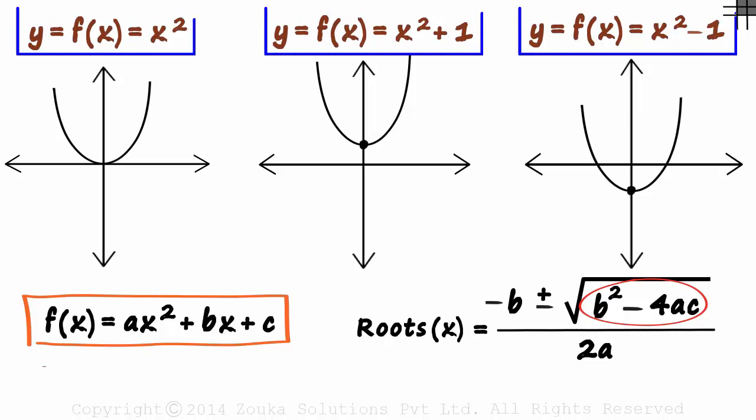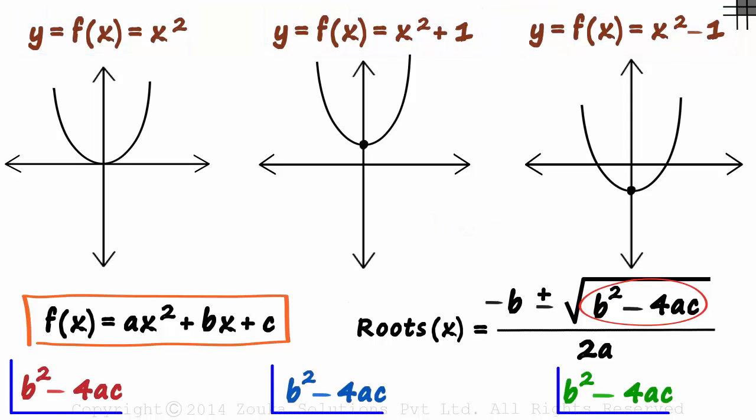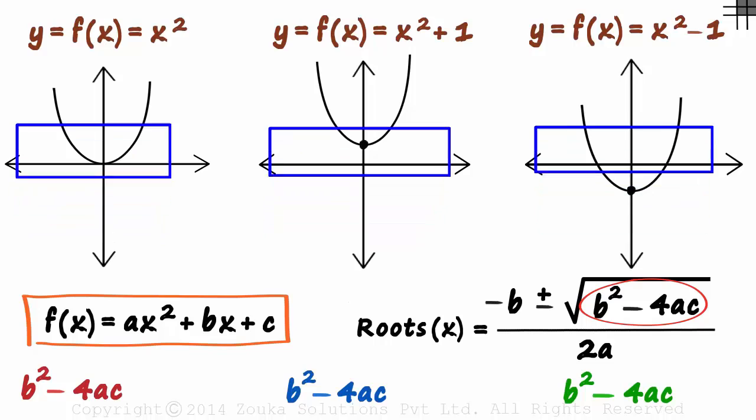Look at these functions. They are all quadratic with b equal to zero. So let's see what b² - 4ac tells us in each case.